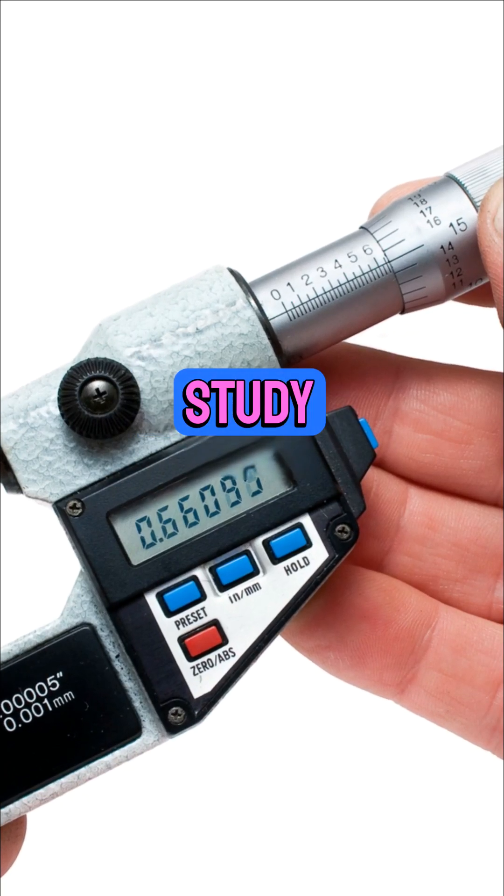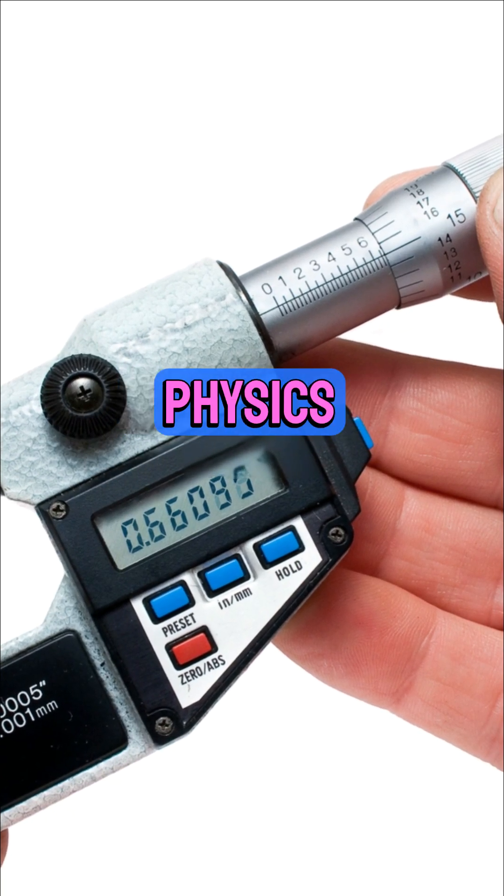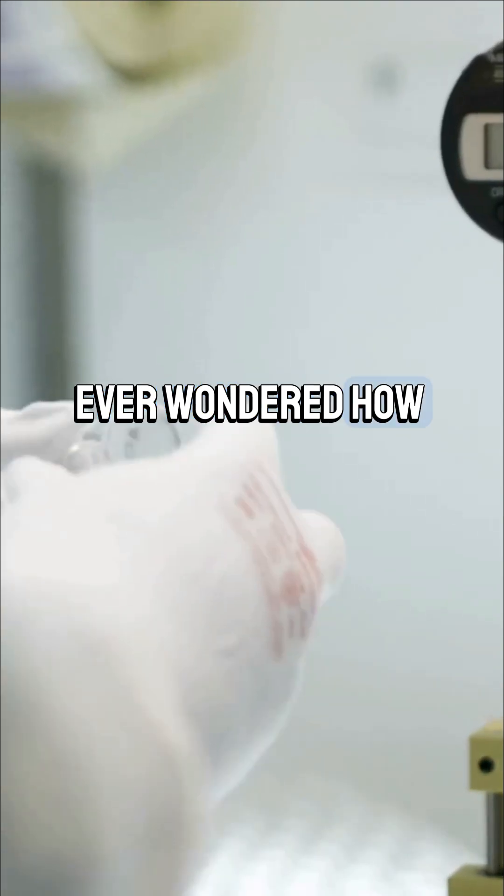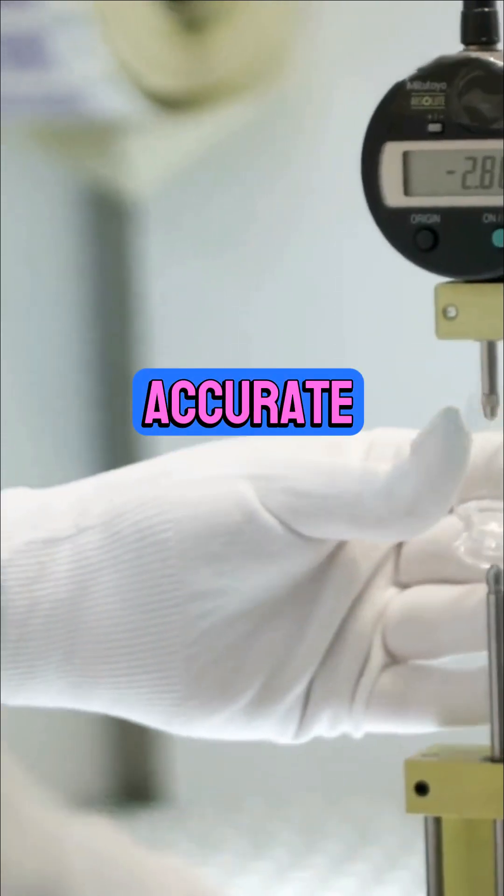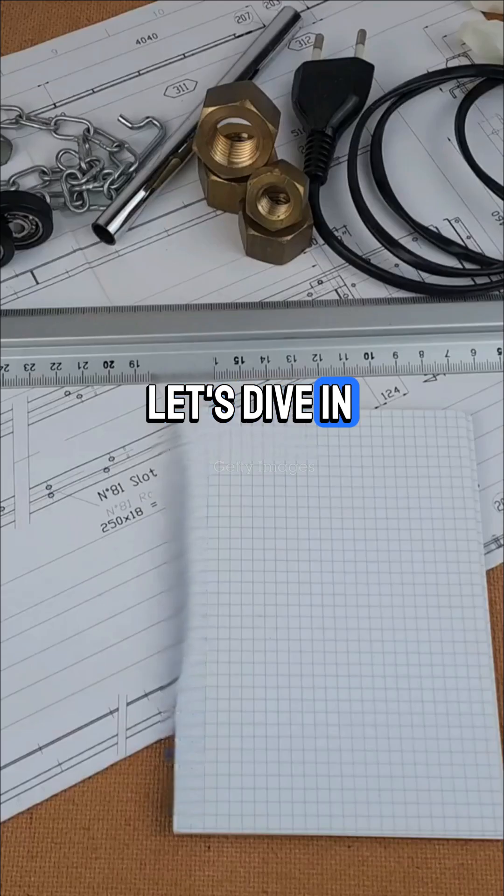Welcome back to IGCSE Study Guides. Today we summarize Physics Chapter 1. Ever wondered how scientists get those crazy accurate numbers? Let's dive in.